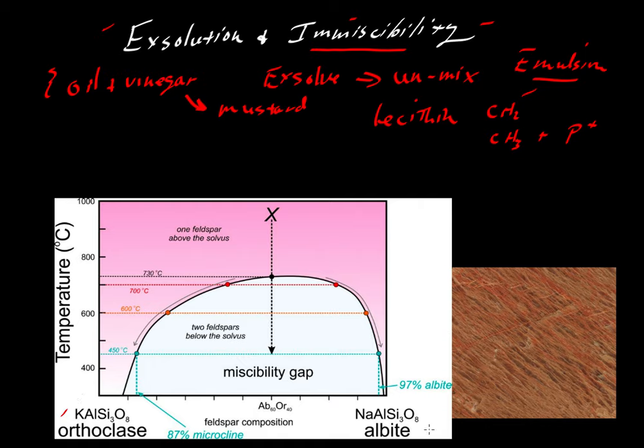Orthoclase can be thought of as our oil and albite as our vinegar. At very high temperatures, they will mix completely. Let's use this diagram from Dexter Perkins' online mineralogy textbook. We'll go through his example where X marks the spot of our initial bulk composition, which he shows here as albite 60 orthoclase 40. If we have that system at very high temperature, above 900 degrees, then we would have a single feldspar.